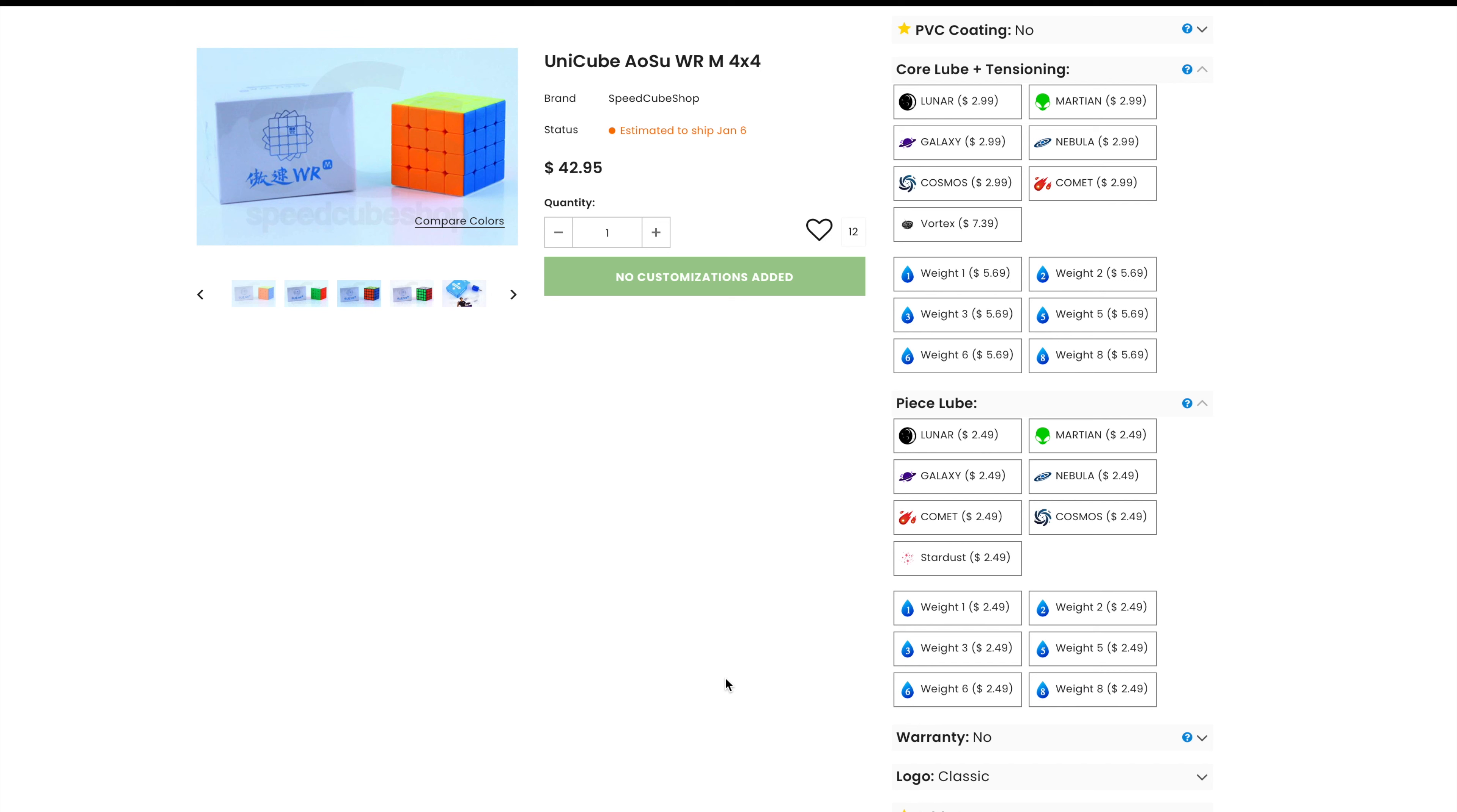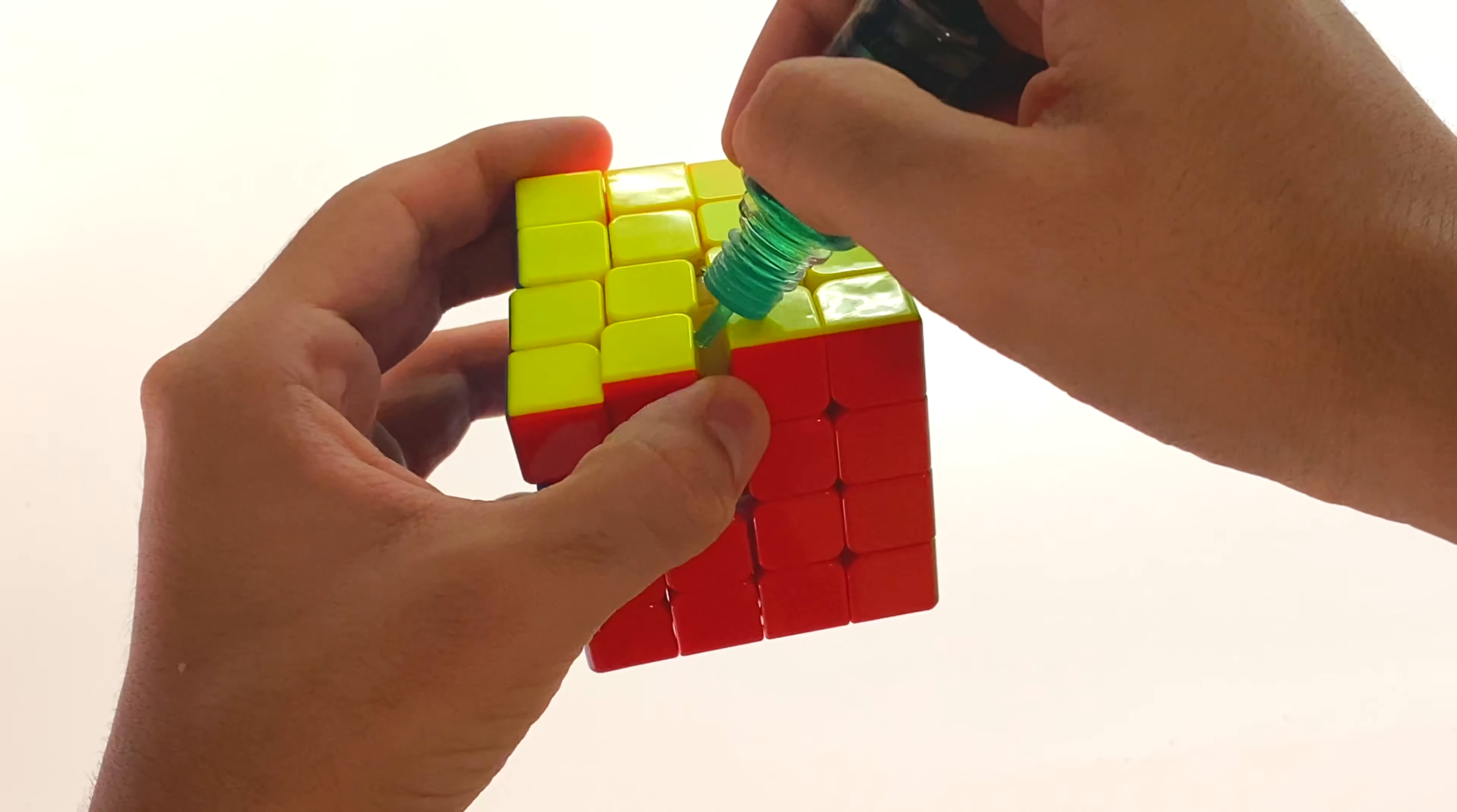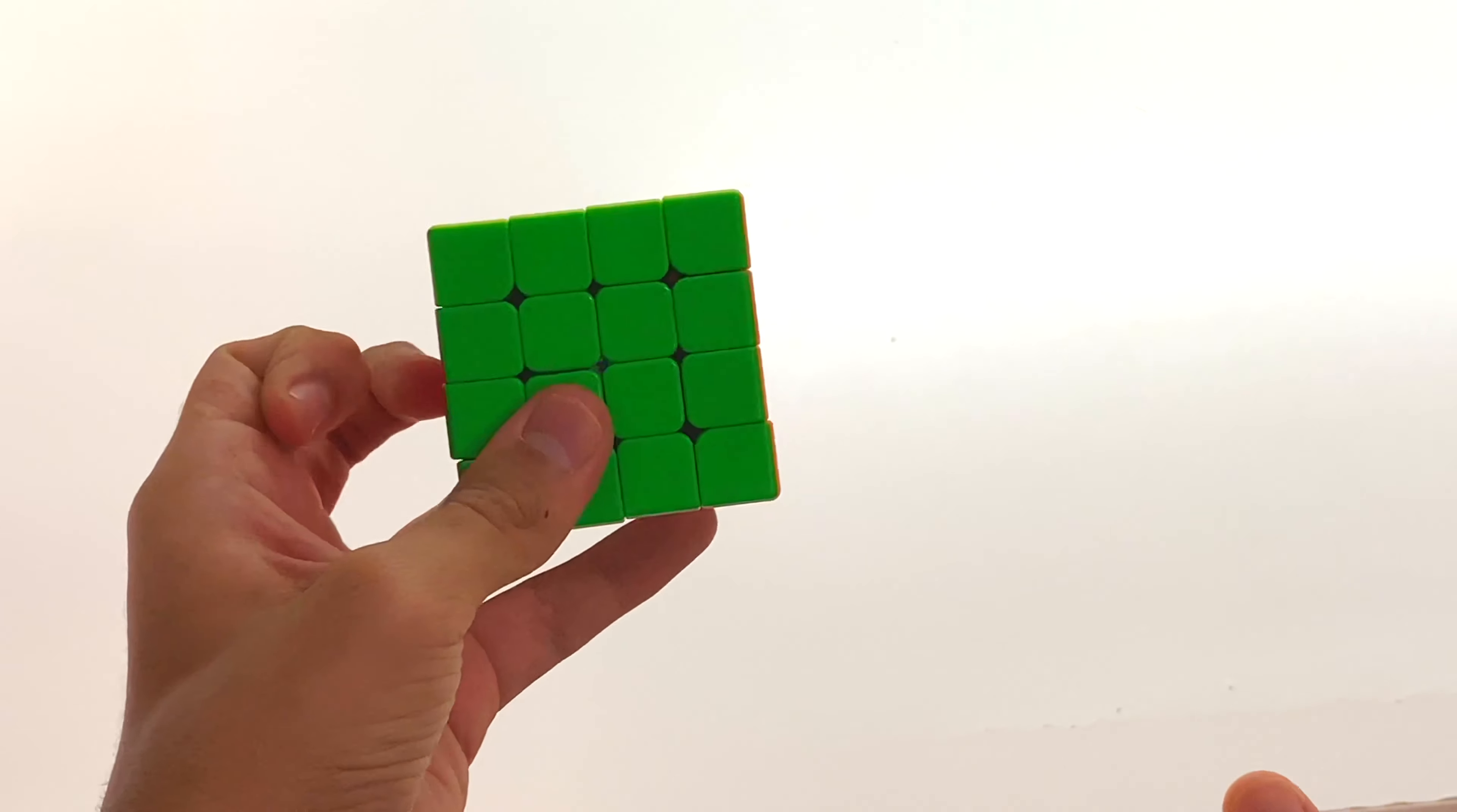For setup, what I did was get a Unicube version of this puzzle set up with Vortex on the core and Lunar and Stardust on the pieces. This worked decently but I added a few drops of Martian on top and loosened the tensions and that did the trick. The cube became a lot better.